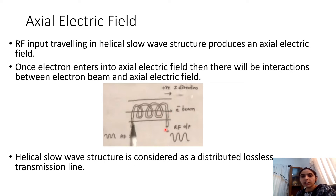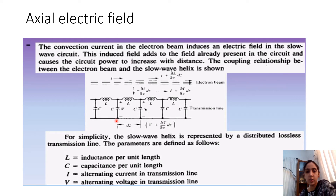To analyze the axial electric field, we consider the helical slow wave structure to be a distributed lossless transmission line. The equivalent circuit of the helical wave structure is represented by a transmission line consisting of inductors and capacitors arranged as: capacitor, inductor, capacitor, inductor, and so on.